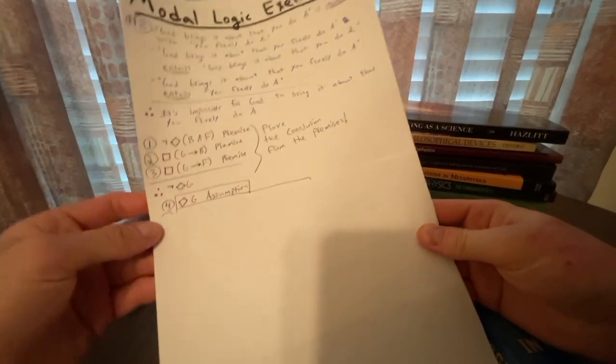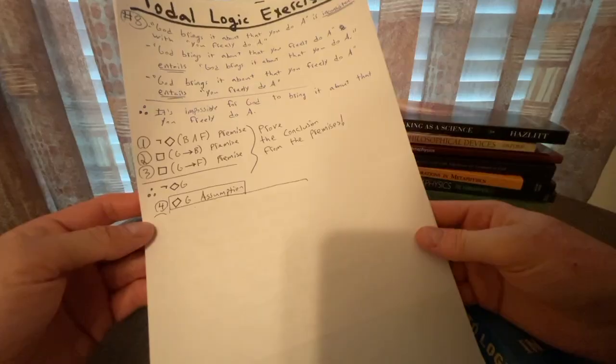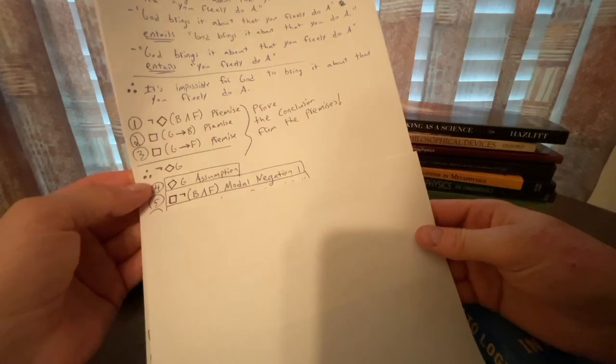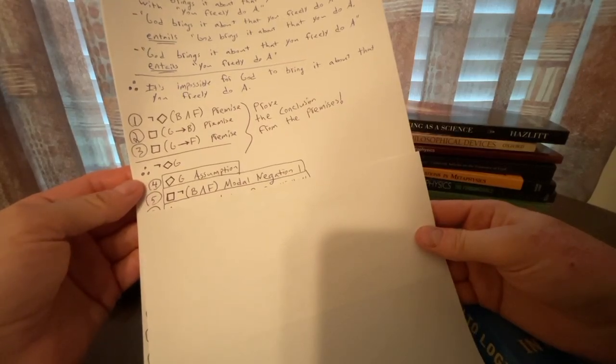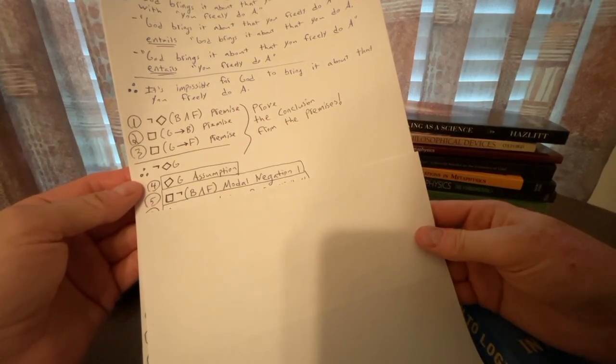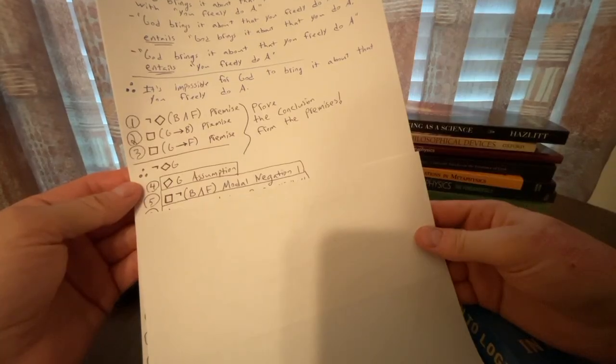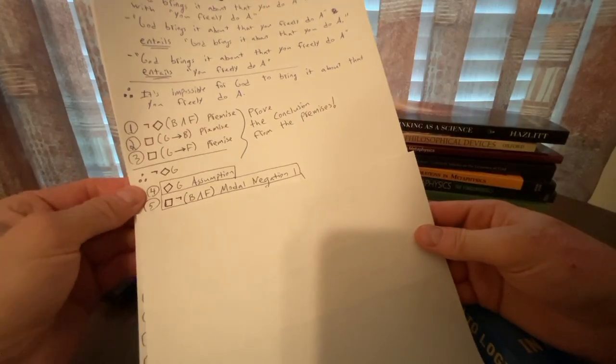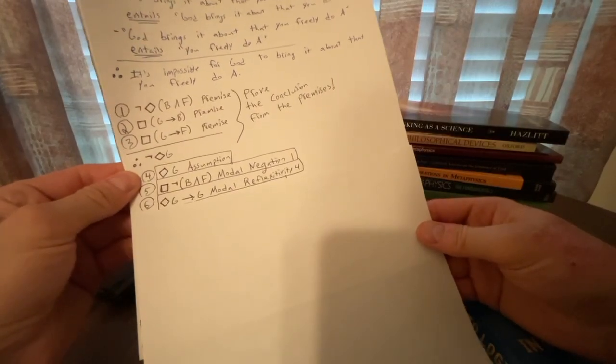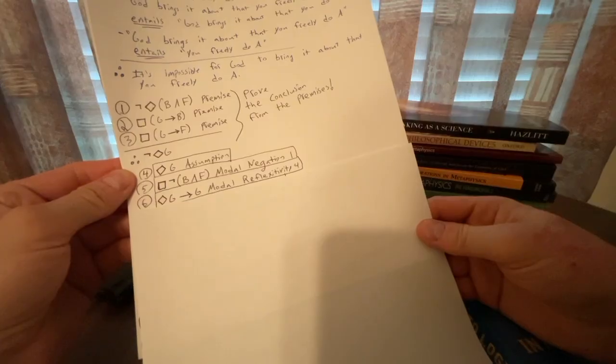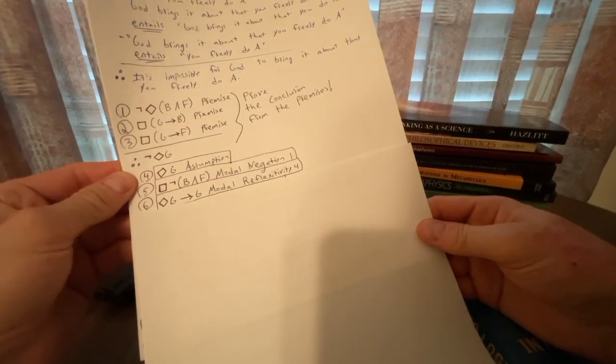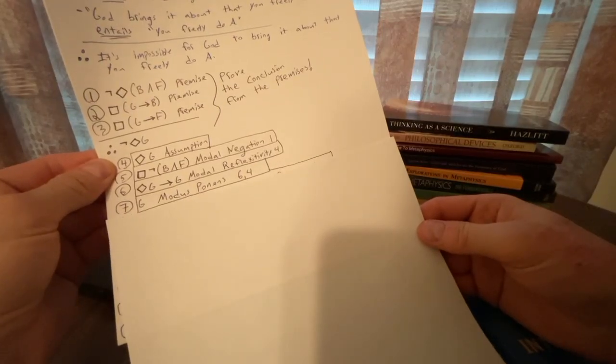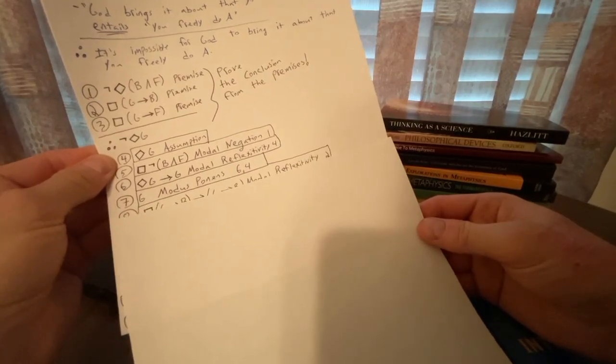We're doing a reductio ad absurdum proof. So our assumption is going to contradict the conclusion we wish to prove. So the contradictory of not diamond G is just diamond G. And then we'll do a modal negation of line one to get box not both B and F. And then we're going to do modal reflexivity on line four. So that will get us diamond G arrow G. So note that we do have that diamond G.